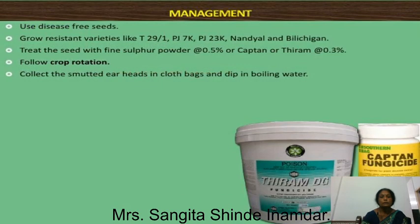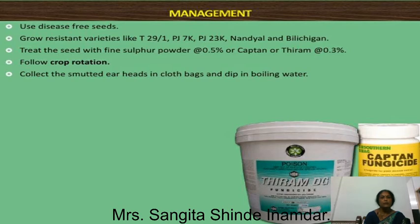This disease is very harmful and is controlled by using some fungicides. Fungicides are chemicals used for the control of fungi. Different types of fungicides are available in the market. The most popular fungicides are Thiram and Ziram. Thiram, Ziram, and Captan fungicide are used for the control of grain smut of Javar.